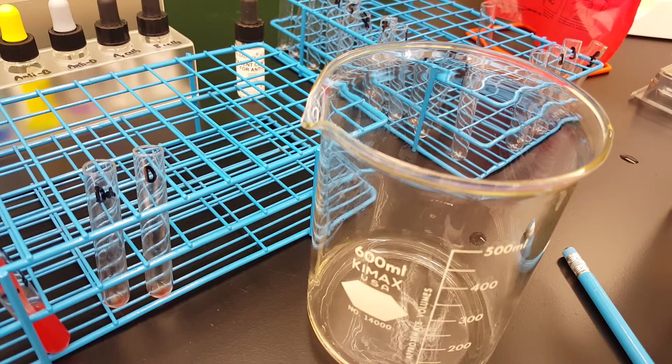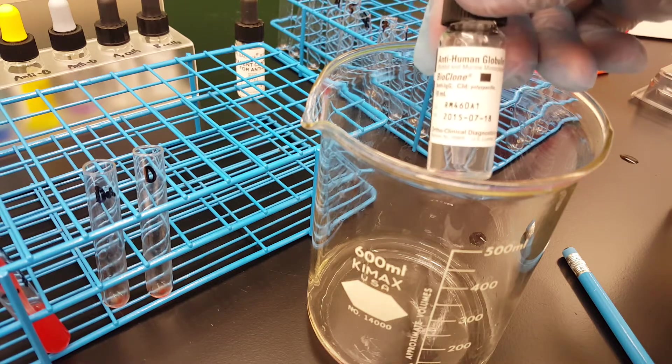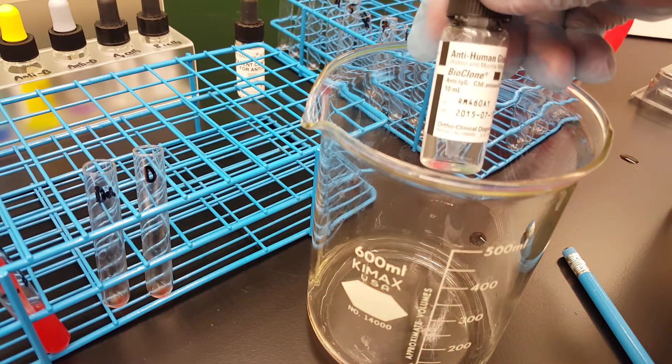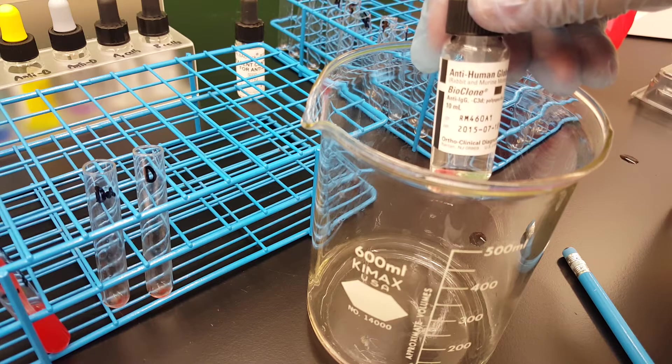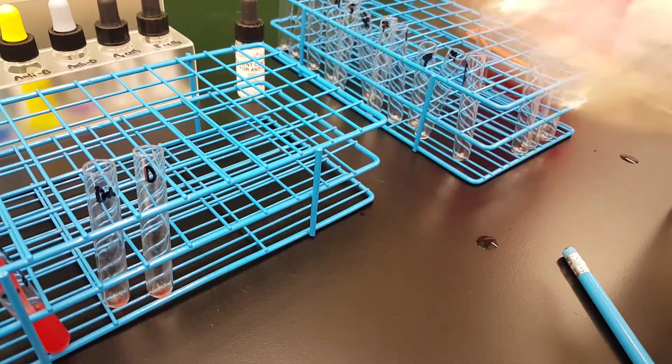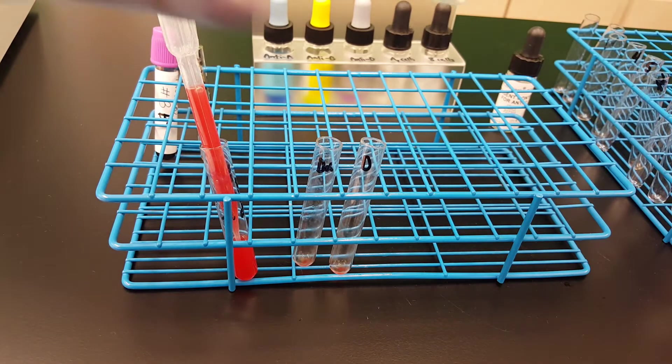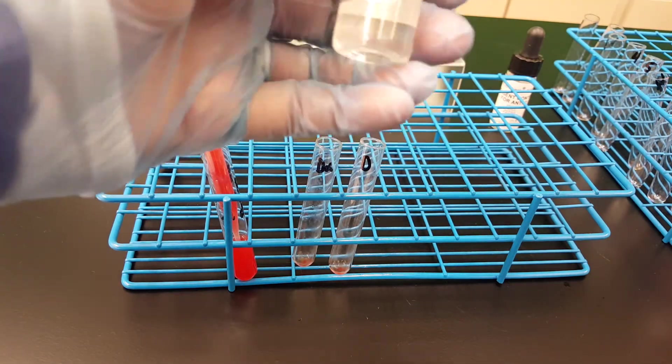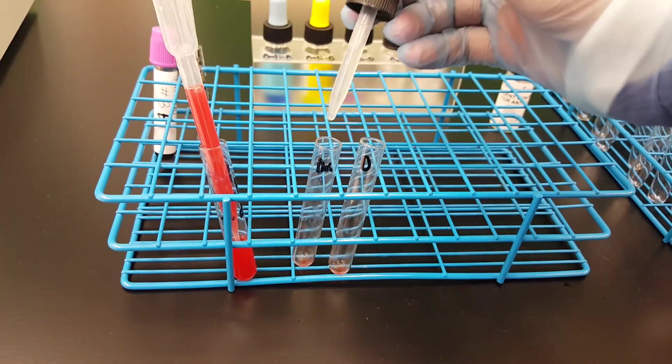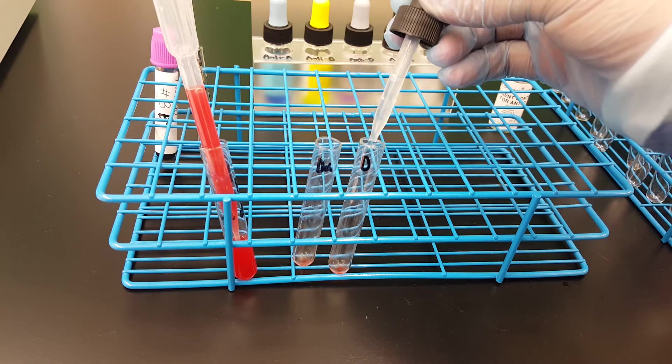Now we're going to add the one drop of the AHG polyspecific anti-IgG and C3D. So this is the AHG reagent. And I'm going to add one drop in each. That's the DU and this is the D.